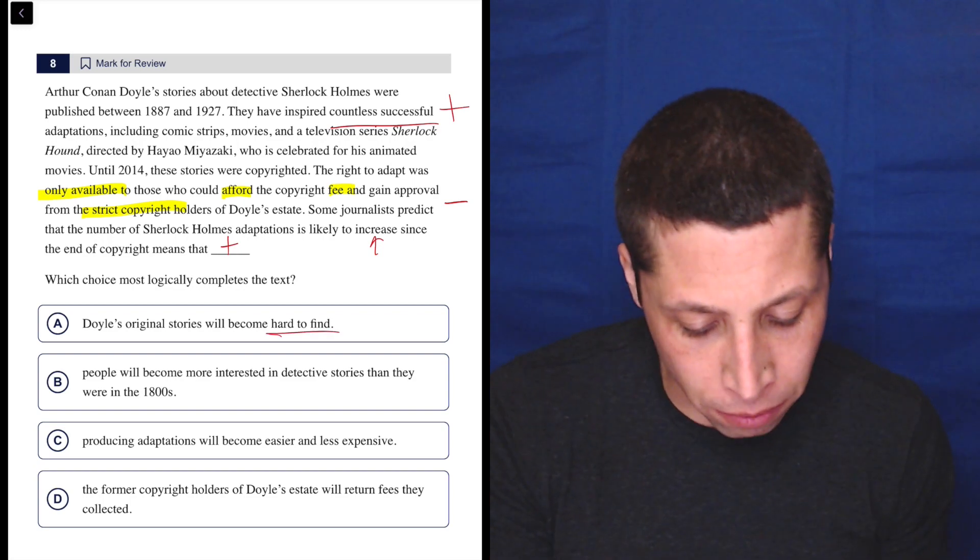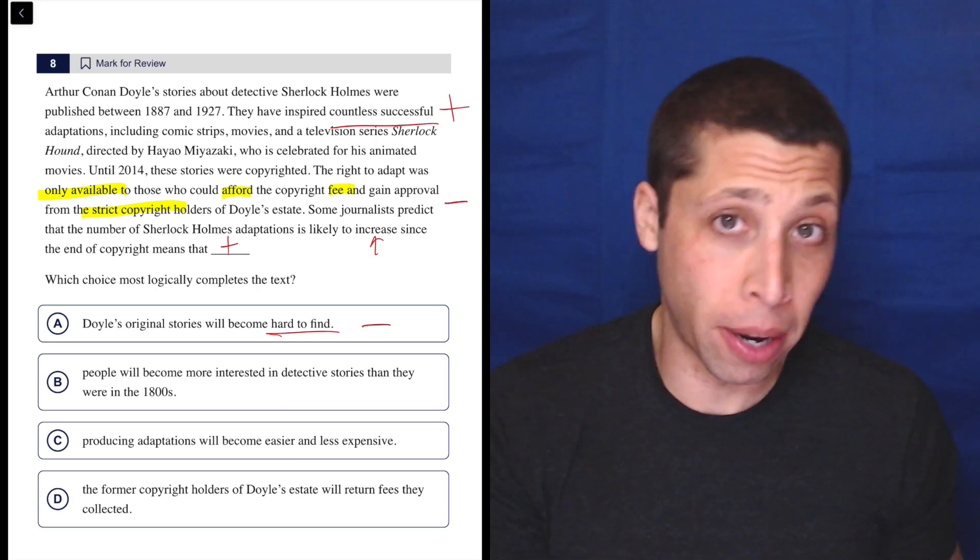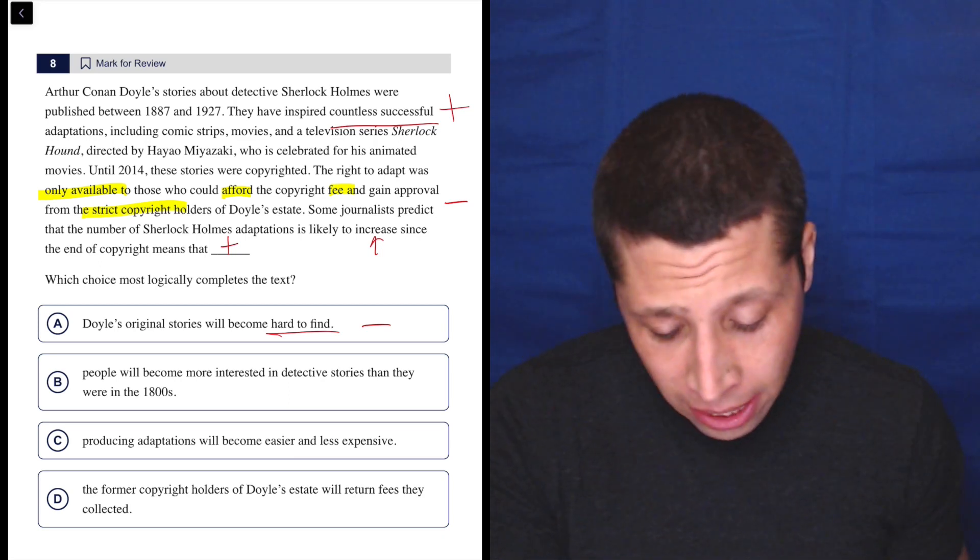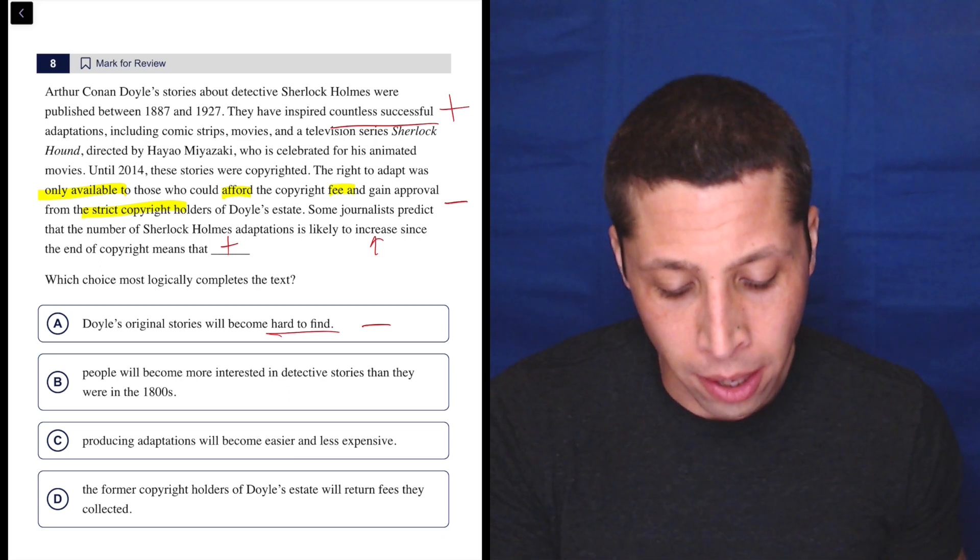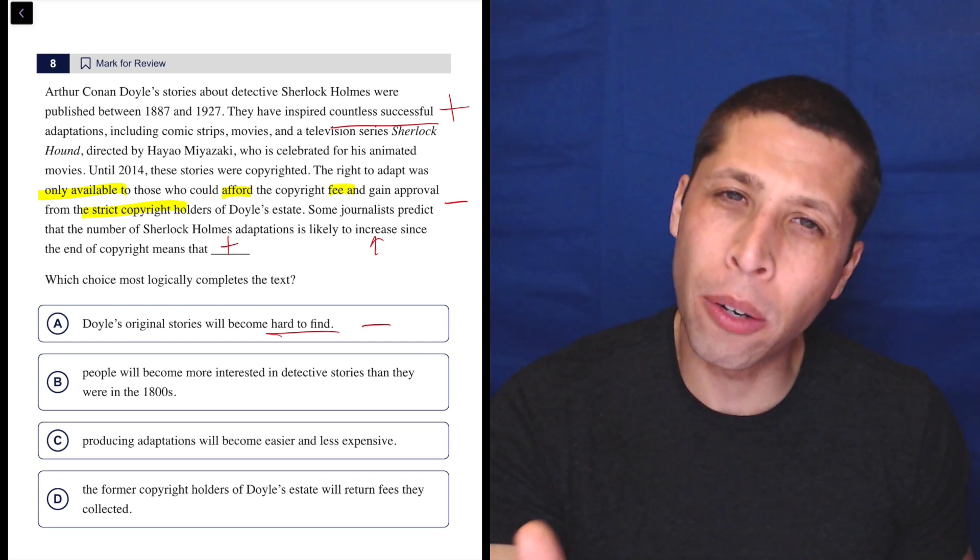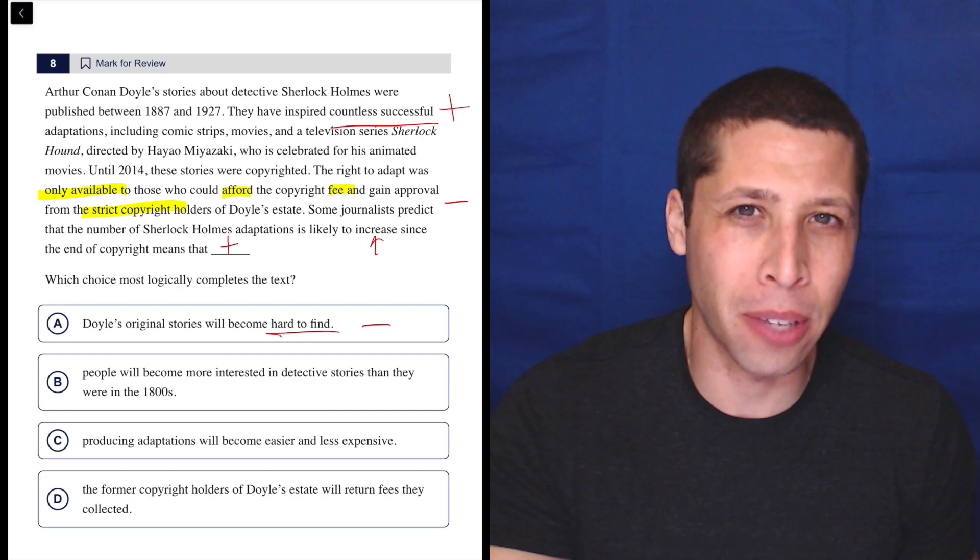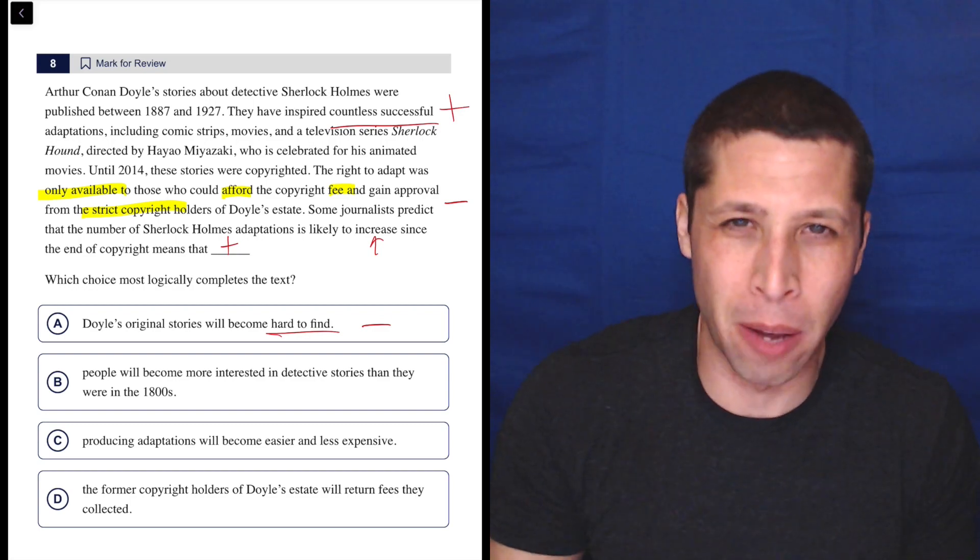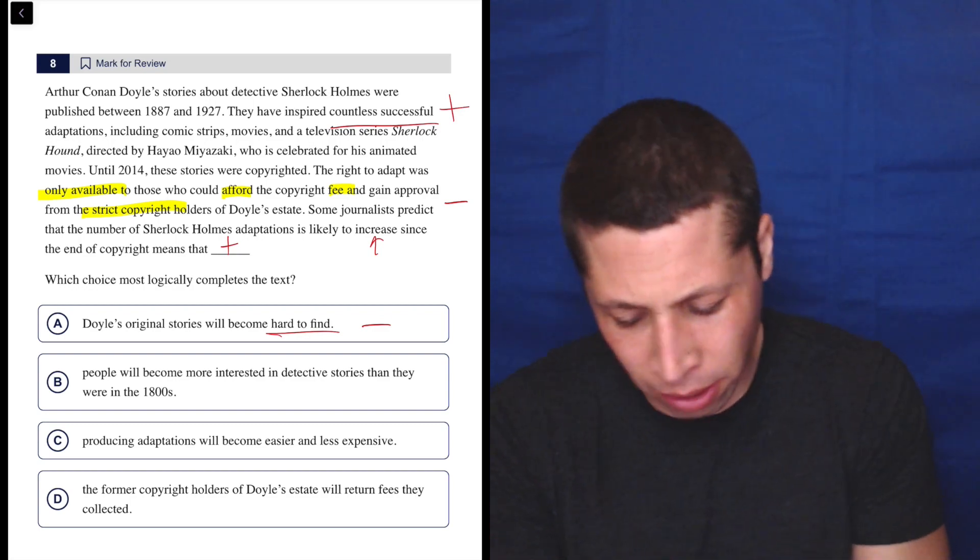Doyle's original stories become hard to find. Well, that sounds like the opposite of what we want—we wanted a positive connotation, this seems negative. If adaptations are going to increase, why would original stories be hard to find? We're not looking for them. We have them. They've been around for a hundred years. I don't even understand what this choice means.